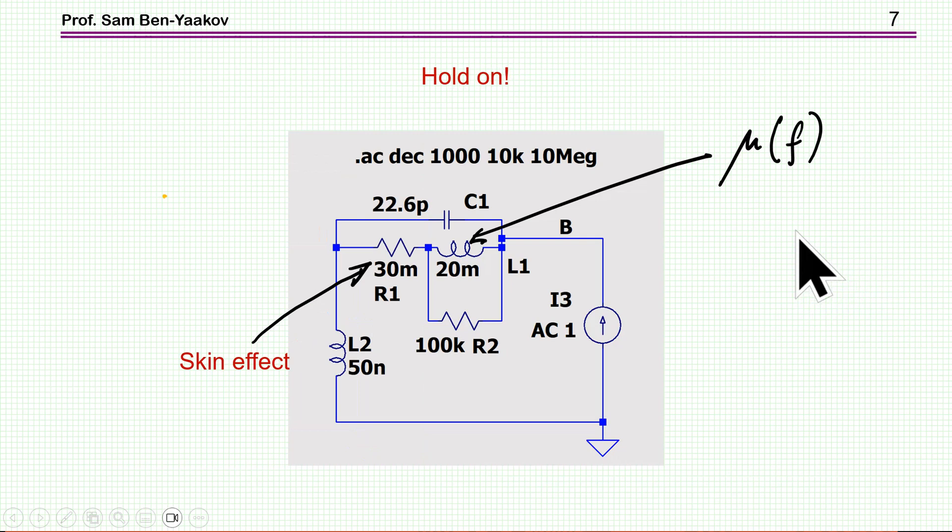But, hold on. This is not the end of the story. We know that, first of all, there is a skin effect, not to mention proximity effect, which causes a higher and higher resistance at high frequency. Aside from the DC, we have, actually, a RAC resistance. And this resistance builds up at higher and higher frequencies. So, it can actually affect the resonant frequency.